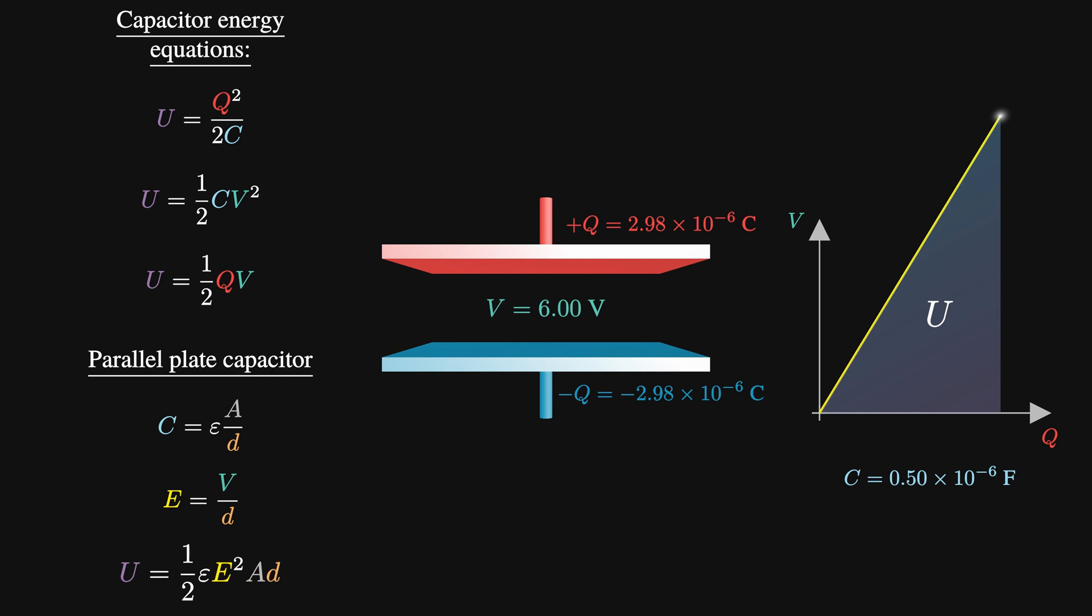So, as you can see, the energy can also be expressed as a half times epsilon times E squared times A times D. Now, a neater way of writing this is by considering the volume omega between the plates, which is just A times D.